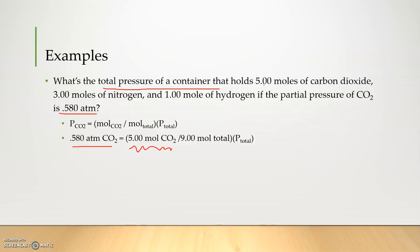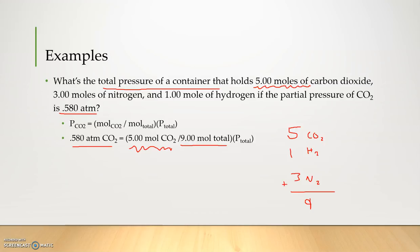We have the partial pressure of carbon dioxide and the moles of carbon dioxide given to us. The total number of moles is nine: five carbon dioxide, three nitrogen, and one hydrogen, giving us nine moles of gas total. We're solving for the total pressure of the system. Rearranging, P total equals 0.580 times nine divided by five, which equals 1.04 atm. So the total pressure of the container holding five moles of carbon dioxide, three moles of nitrogen, and one mole of hydrogen gas is 1.04 atm.